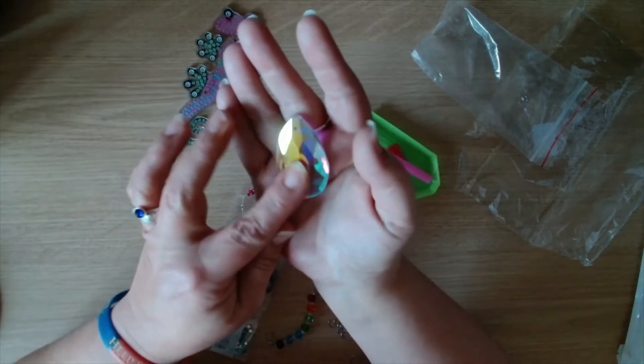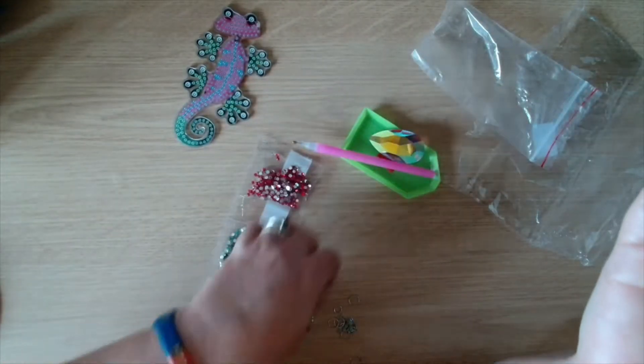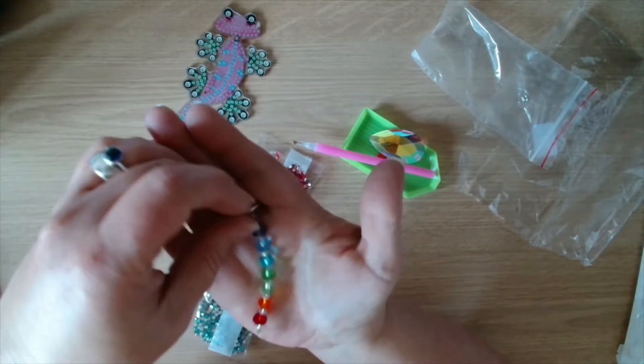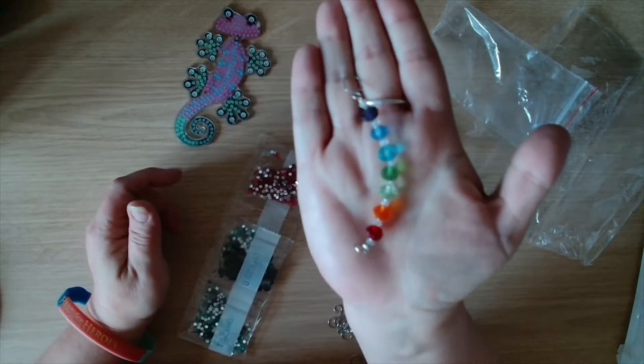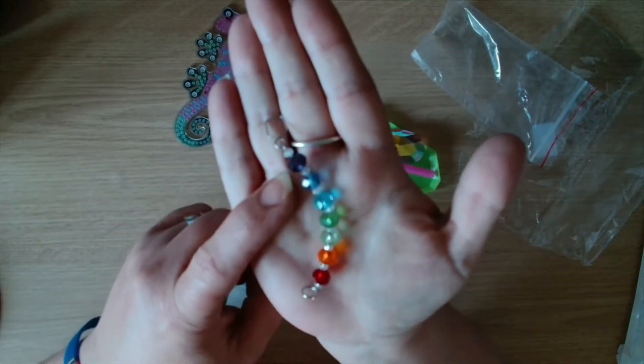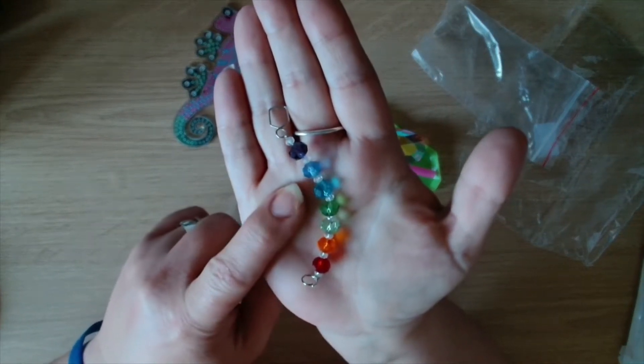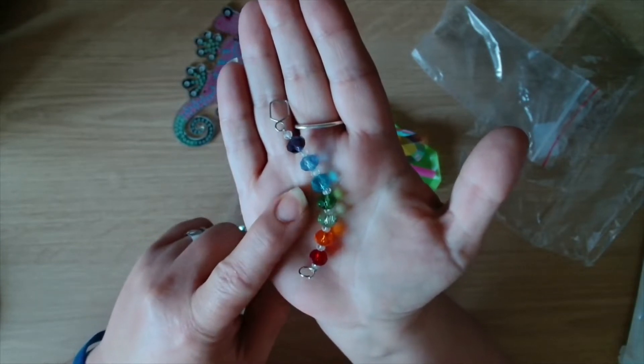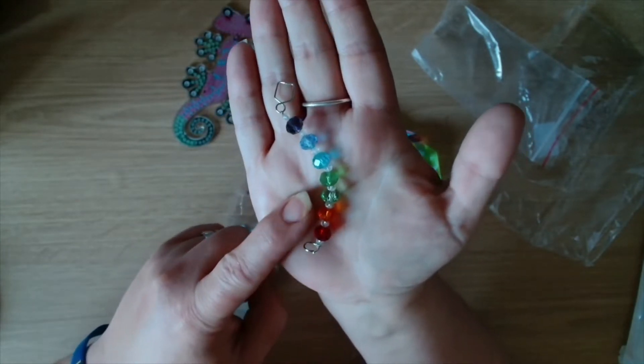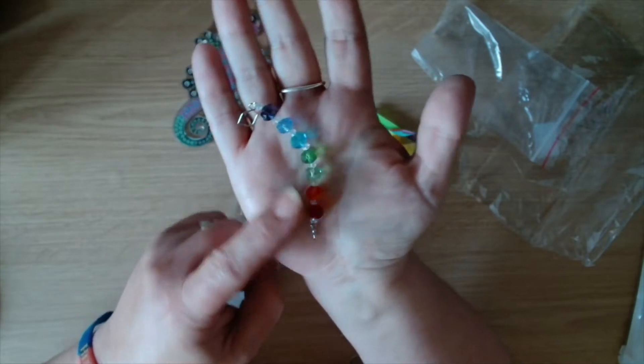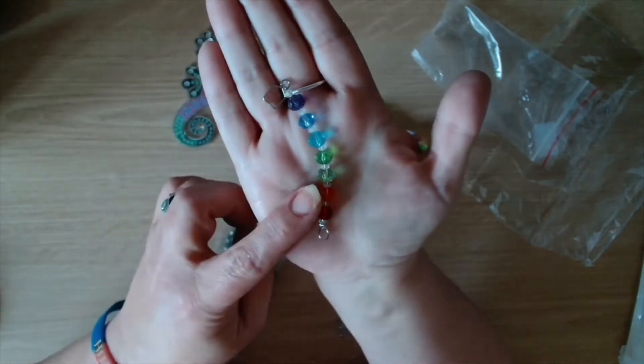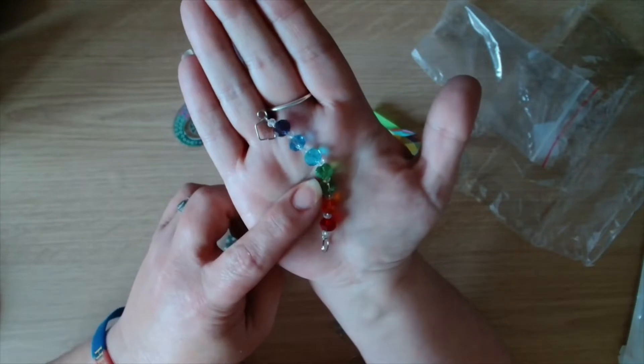Then we have a string of gems. We've got a purple, a blue, a teal, a green, a lighter green, an orange and a red, and then in between each of those we have got a little white crystal.